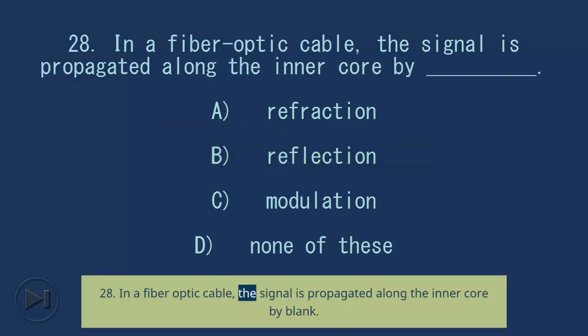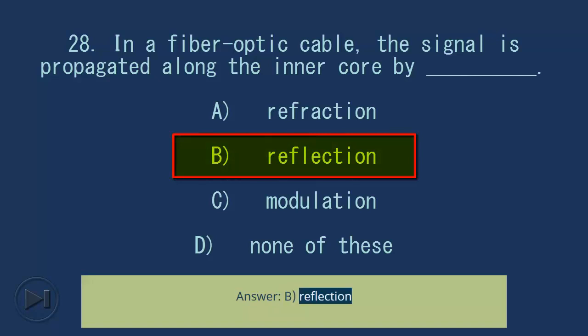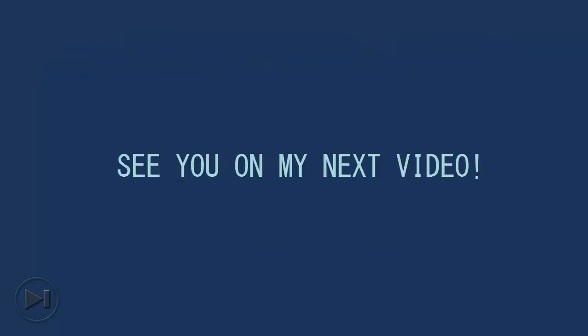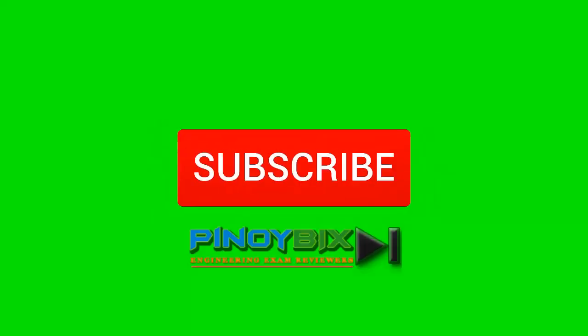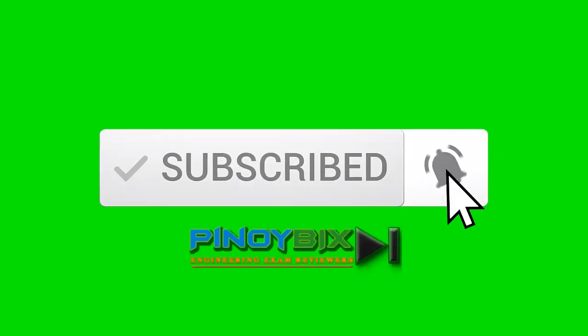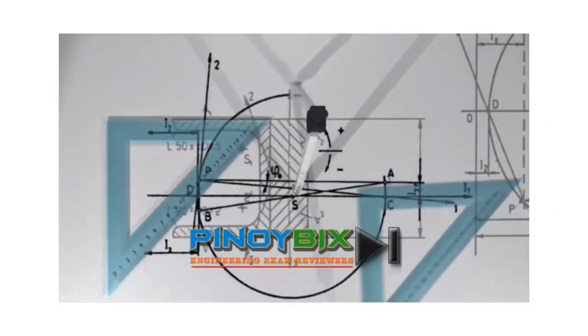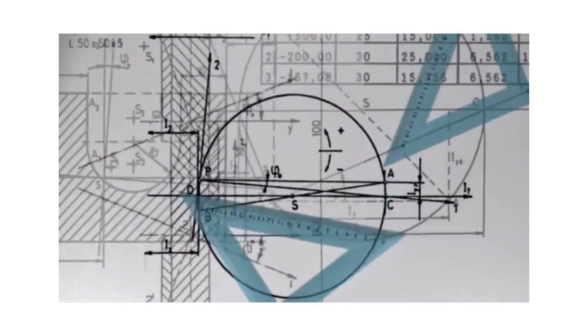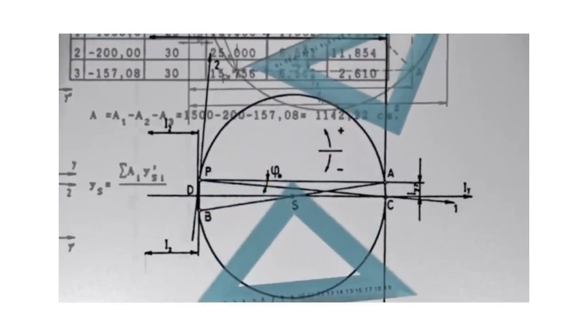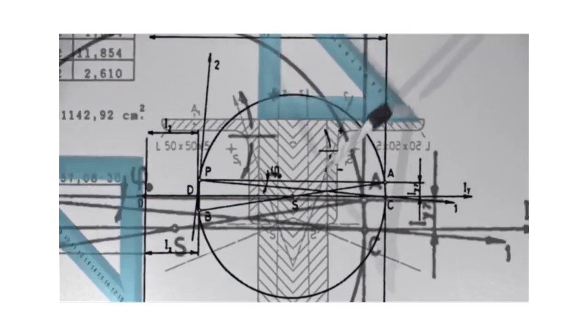Question 28: In a fiber optic cable, the signal is propagated along the inner core by blank. A) refraction, B) reflection, C) modulation, D) none of these. Answer: B, reflection.